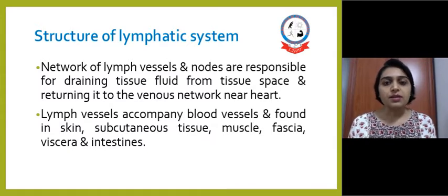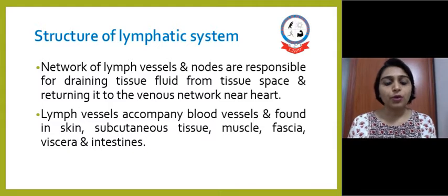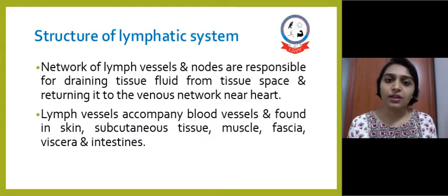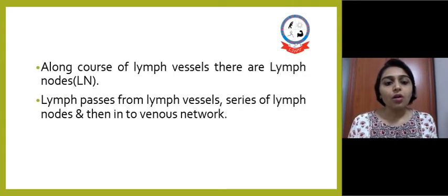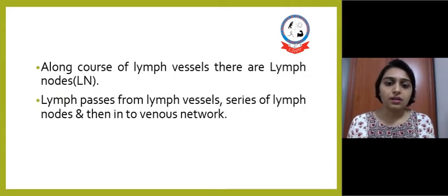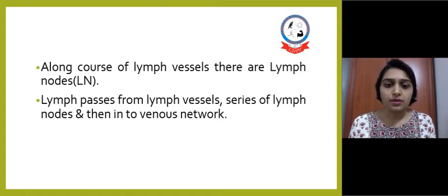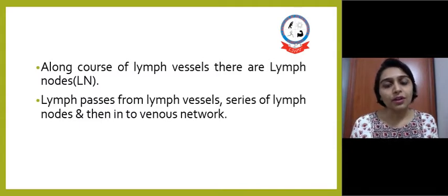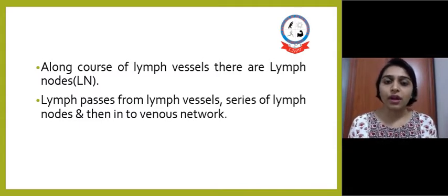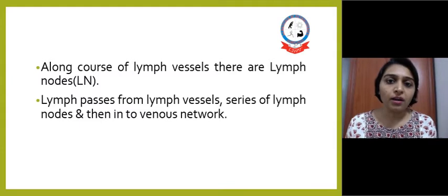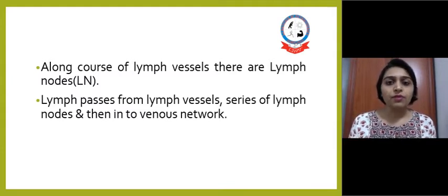Lymphatic vessels accompany blood vessels and are found in skin, subcutaneous tissue, muscles, fascia, viscera, and even in the intestines. Along the course of lymphatic vessels there are lymph nodes. The lymph passes from lymph vessels through a series of lymph nodes, then into the venous network going into the right atrium of the heart, and from there it moves into the systemic circulation.